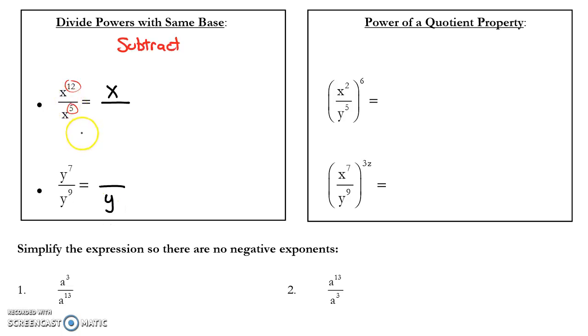That's the first way you should start this every time you're simplifying. Then it's a subtraction problem. 12 minus 5 is 7, so my exponent of 7 goes along with x. Here, 9 minus 7 is 2, so the exponent of 2.